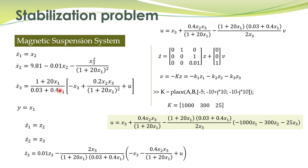We have already solved the stabilization problem for the magnetic suspension system. That system was nonlinear — we obtained a normal form representation and then defined a controller giving a linear representation. Using state feedback control we defined the controller. There were some typos in that controller which still need to be corrected. We also simulated the system and verified that the controller works appropriately.